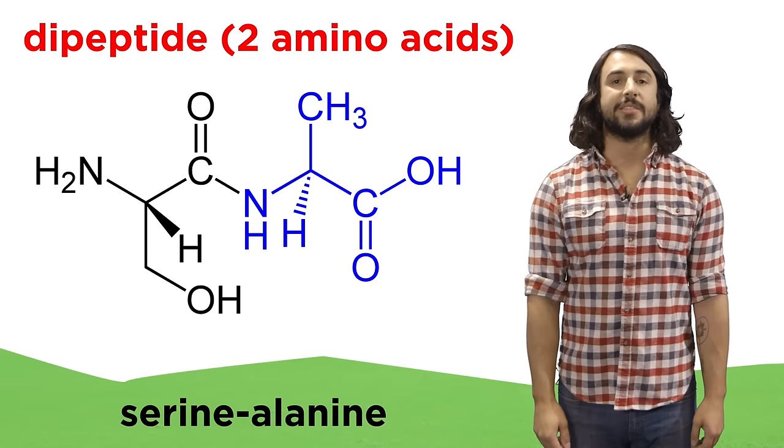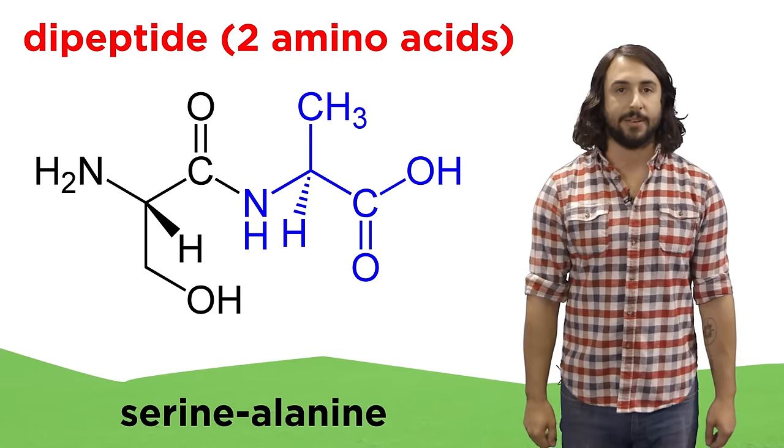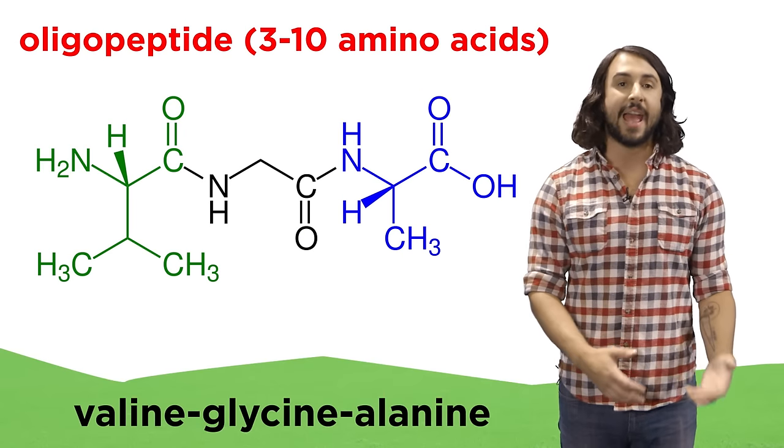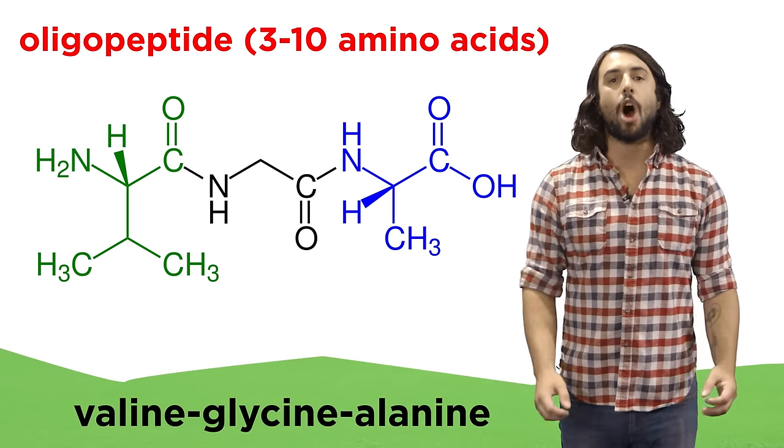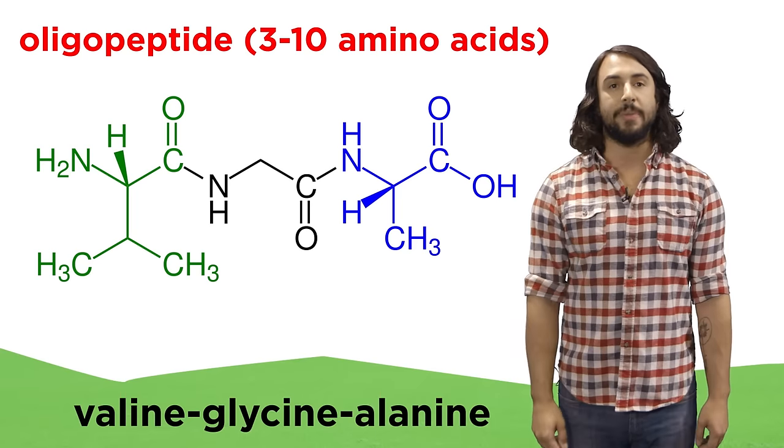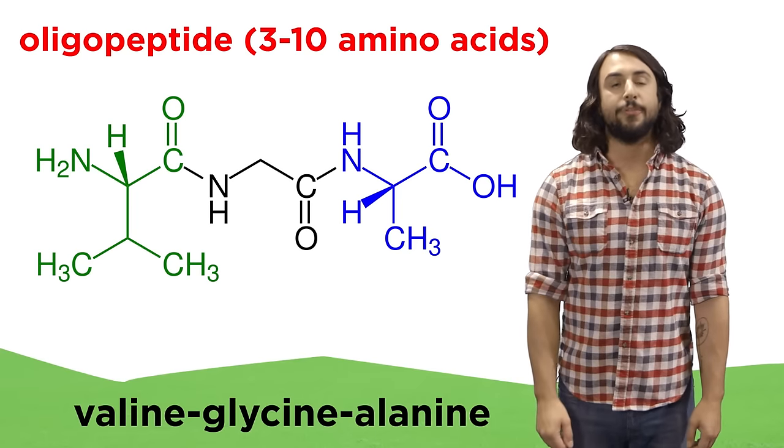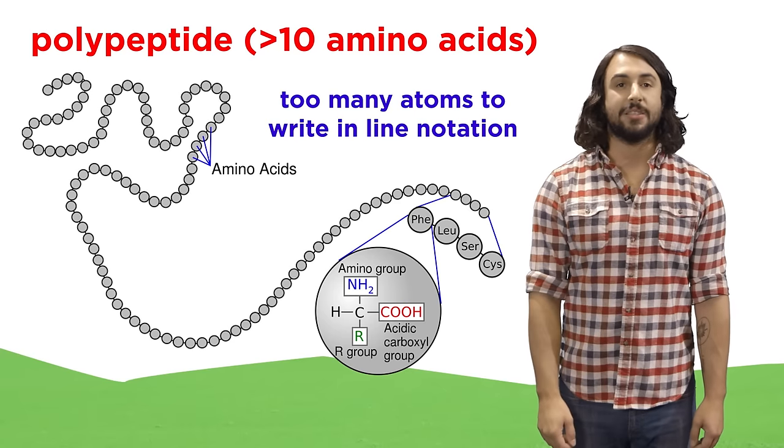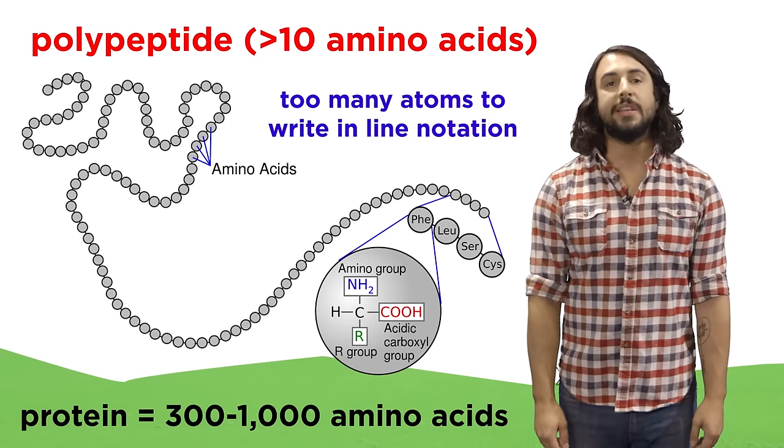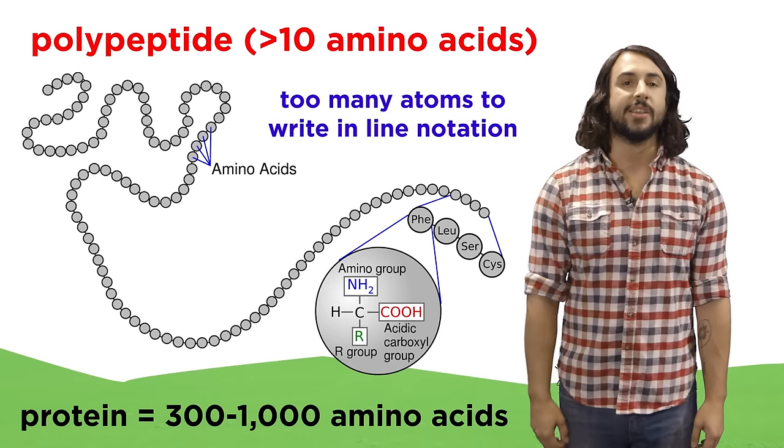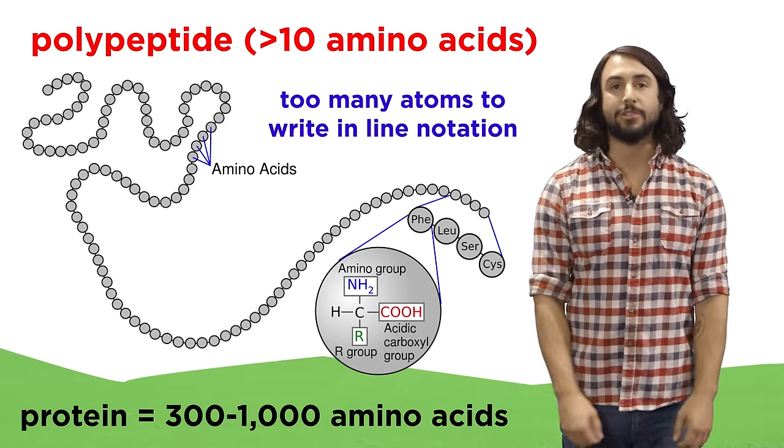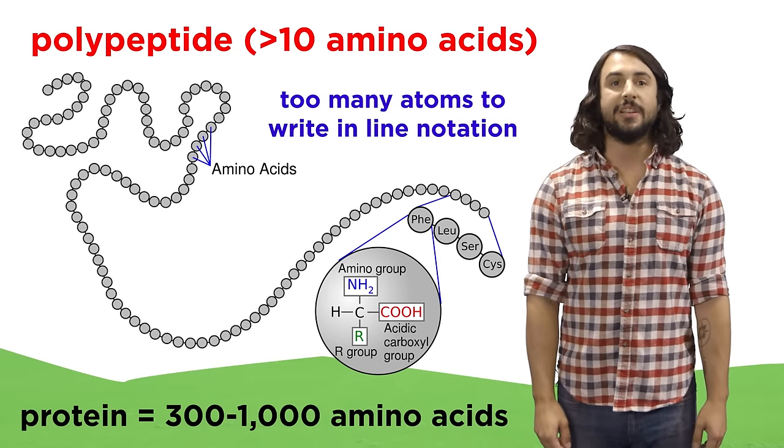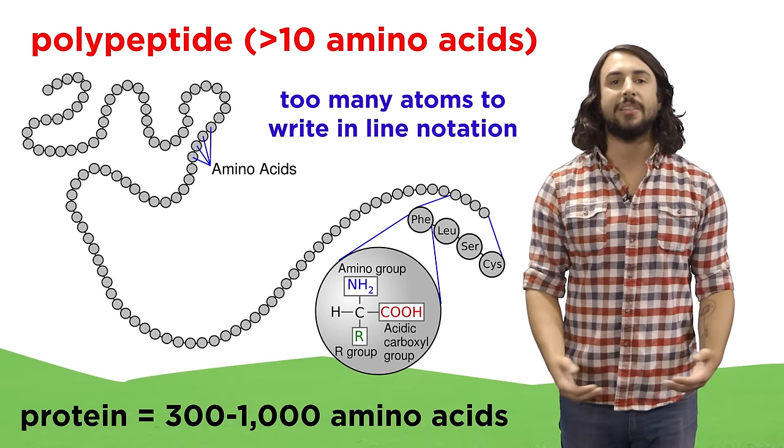If two amino acids combine we get a dipeptide. If between three and ten come together we would call that an oligopeptide, since oligo means just a few. And if more than ten come together we will call that a polypeptide, since poly means many, and proteins are large polypeptides of around three hundred to a thousand amino acids that are folded in such a way that they have some biological activity.